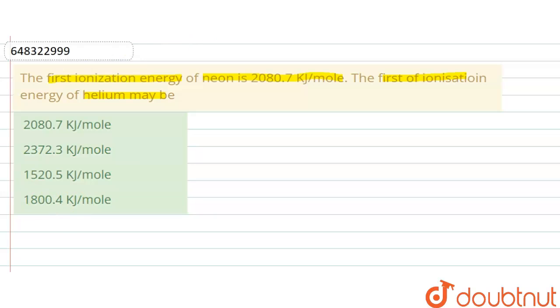So here, neon ionization energy value is 2080.7 kilojoule per mole. The first ionization energy of helium may be, asks the question. So in a group of noble gases,